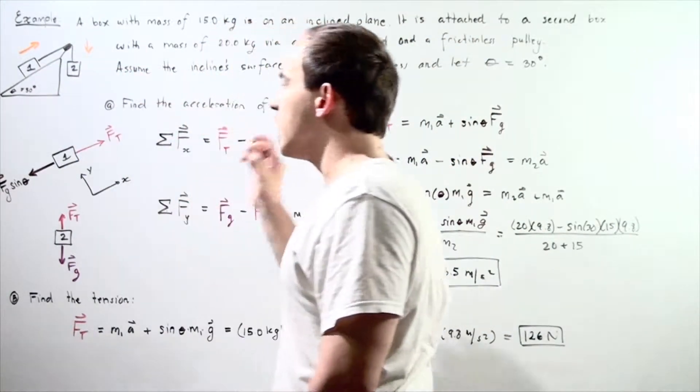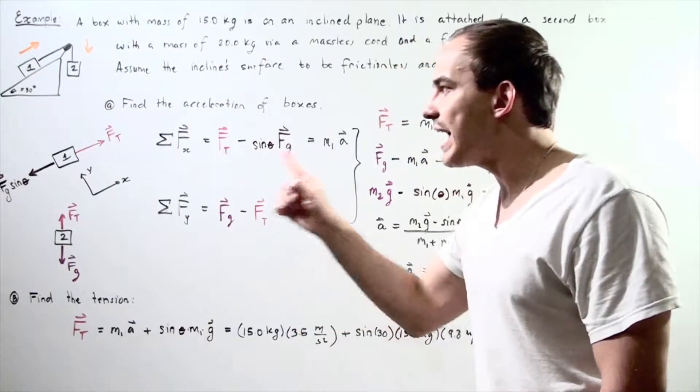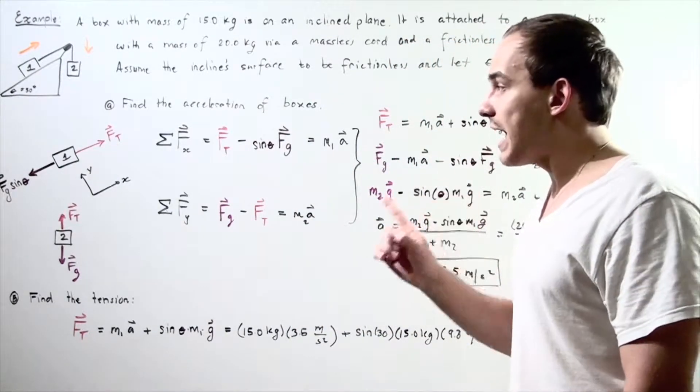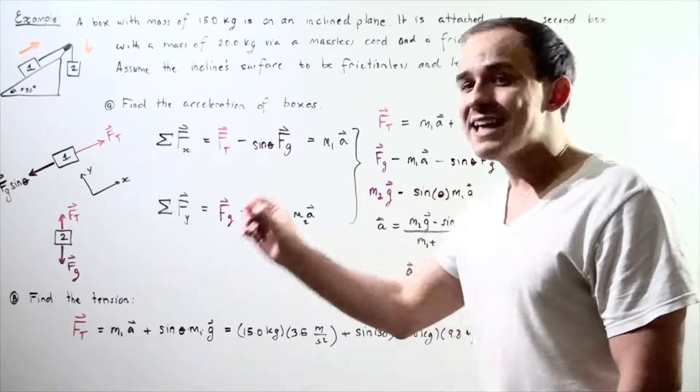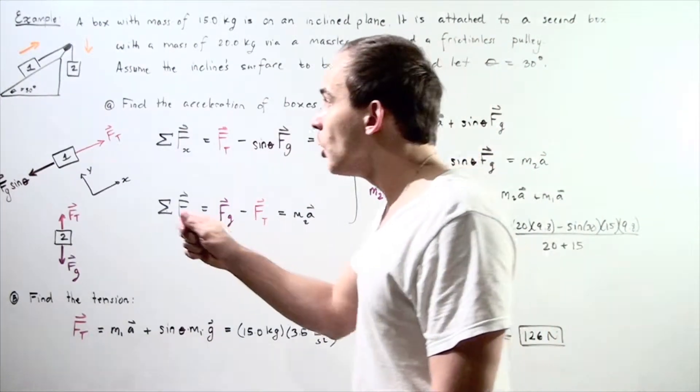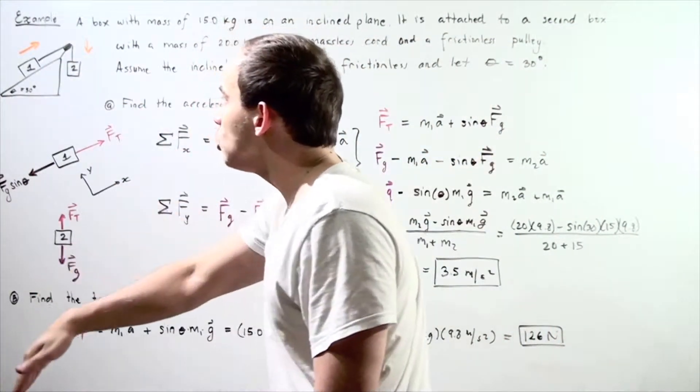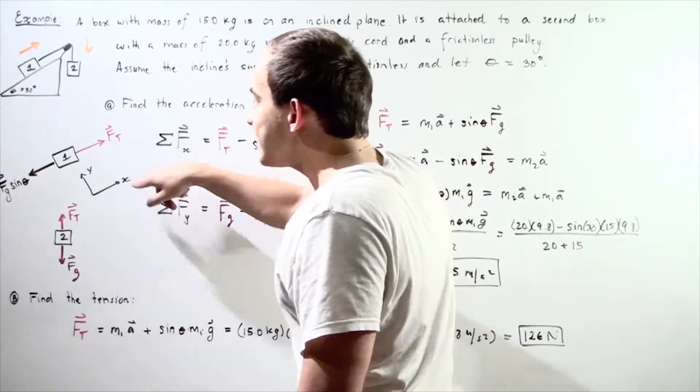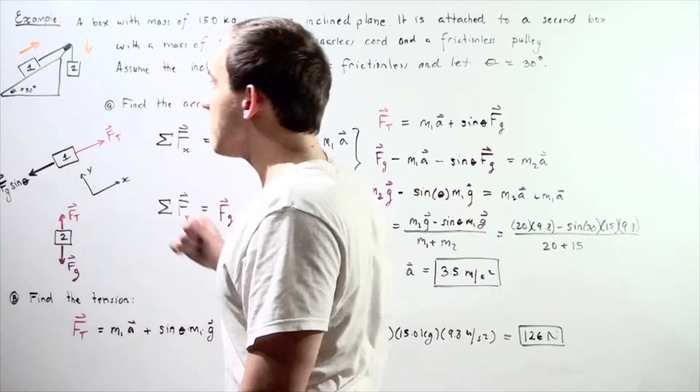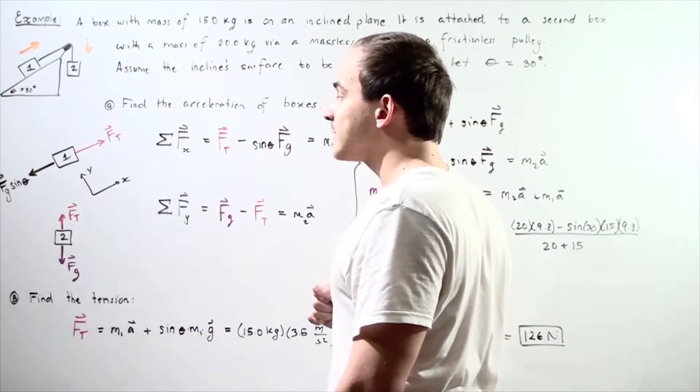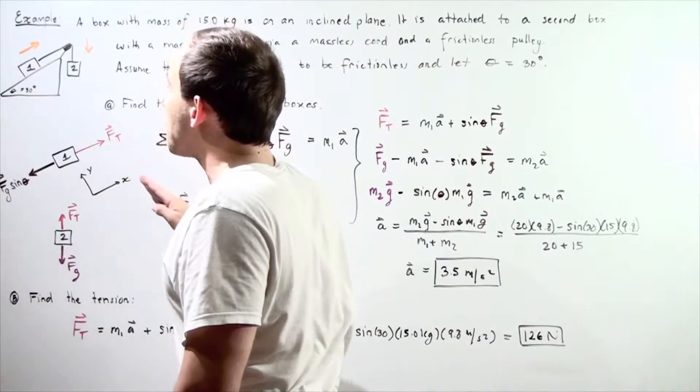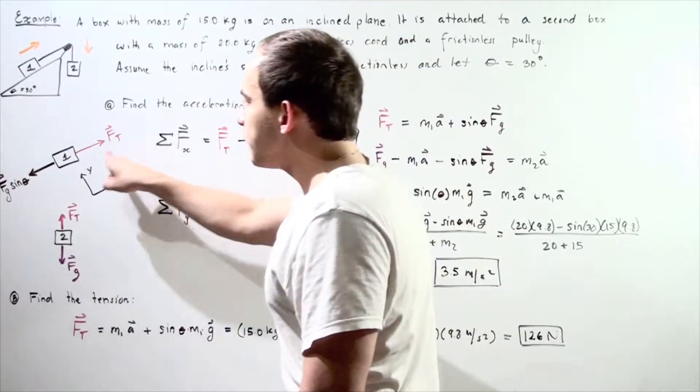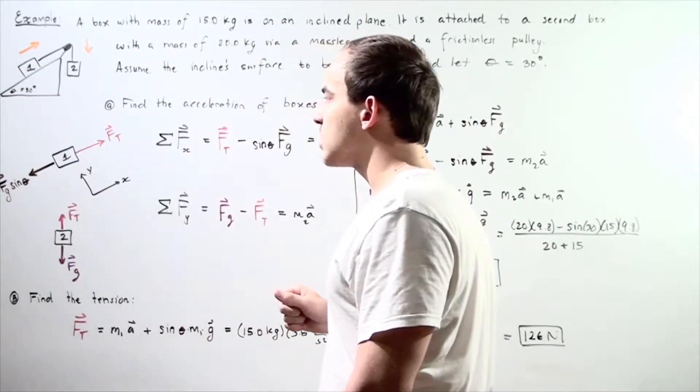Let's begin with box one. Let's draw all the forces acting on box one. One force that is acting on box one is the tension in our rope and it's pulling box number one along the inclined plane. If we choose the x-axis to be the surface of our inclined plane and the y-axis to be the axis perpendicular to our surface as shown here, we have the following free body diagram.